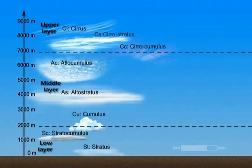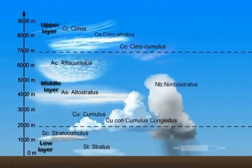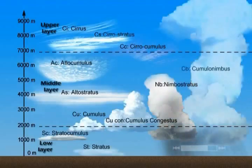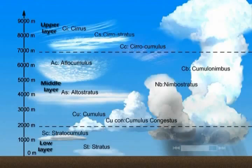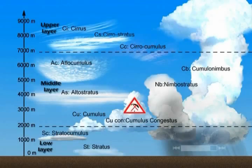This is why cumulus clouds are a paraglider pilot's favorite. Finally, there are clouds with an impressive vertical development such as cumulus congestus, nimbostratus, or cumulonimbus. These clouds belong to several levels at the same time. Cumulonimbus are cumulus clouds that have kept on developing vertically — their bulging shape is typical. At this point, they become very dangerous clouds for our activity.